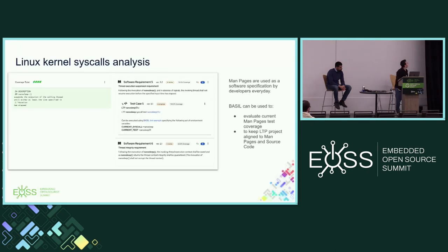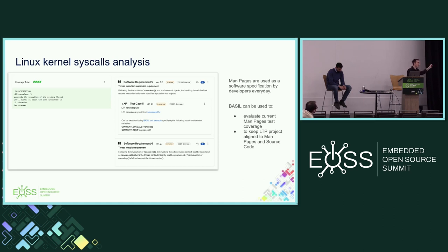One example is an analysis of a kernel syscall - specifically nanosleep. Two requirements were created and a test case from LTP (Linux Test Project) was linked under a requirement and run inside BASIL. There's also an example of running a glibc single test from the glibc upstream test suite. The idea proposed to LTP is to create a relation between existing tests and man pages - that discussion started this week.